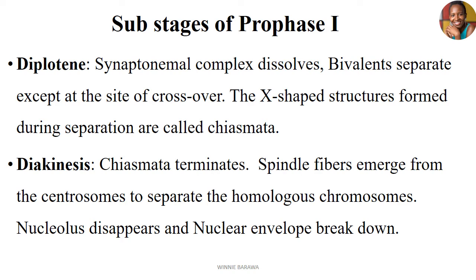Then we have the Diplotene stage, where the synaptonemal complex starts to dissolve. The bivalents are separating except at the site of crossover, and the X-shaped structures formed during the separations are now called chiasmata. The complex starts to dissolve and the bivalents are separating from each other except where the crossover occurred — that part remains, as the materials are not exchanged back; they remain after the successful exchange.